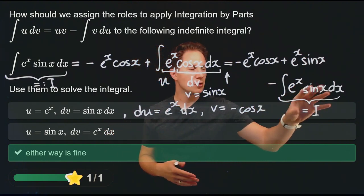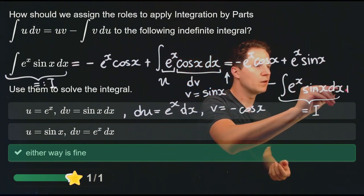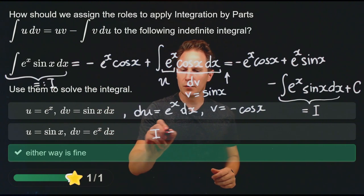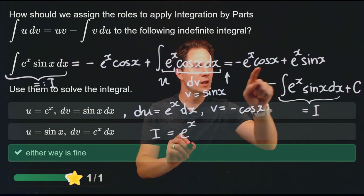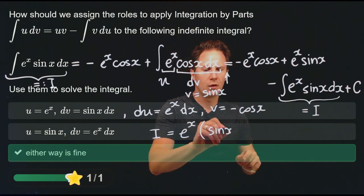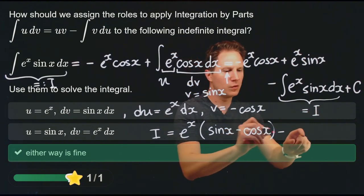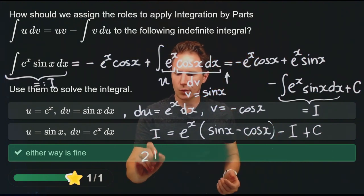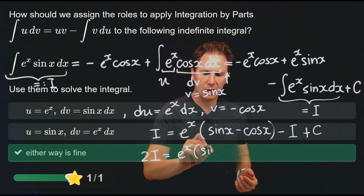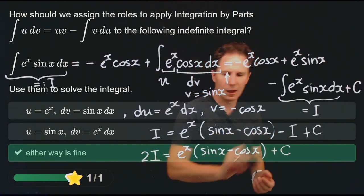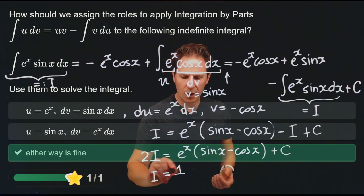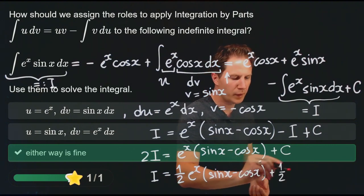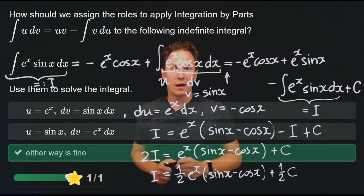If we call our target integral I, we now have: I equals eˣ·(sin(x) − cos(x)) minus I plus c, accounting for the arbitrary constant from indefinite integrals. Adding I to both sides gives 2I equals eˣ·(sin(x) − cos(x)) plus c. Dividing both sides by 2, the integral of eˣ·sin(x) dx equals one-half times eˣ times (sin(x) − cos(x)) plus an arbitrary constant.